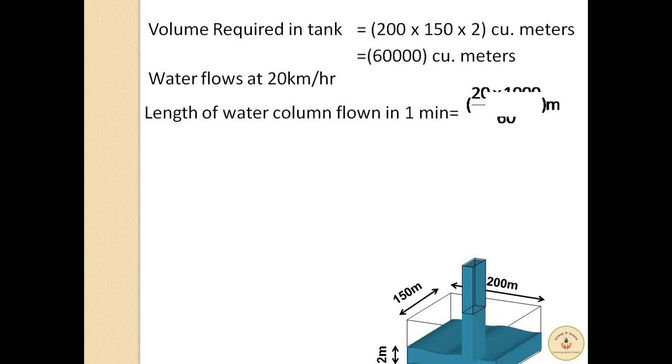So firstly 20 km when converted to meters, that is 20 x 1000 gives us 20000, and when divided by 60 we obtain the length covered in 1 minute in meters, which is 1000/3 meters. So the water when flowing at 20 km per hour speed covers 1000/3 meters in 1 minute.